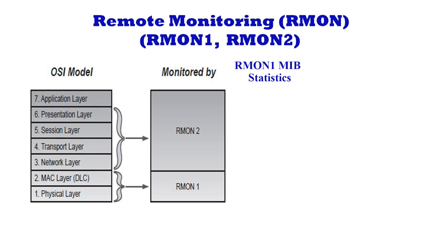Statistics: contains statistics measured by the probe for each monitored interface on this device. History: records periodic statistical samples from a network and stores them for retrieval. Alarm: periodically takes statistical samples and compares them with set thresholds for event generation.